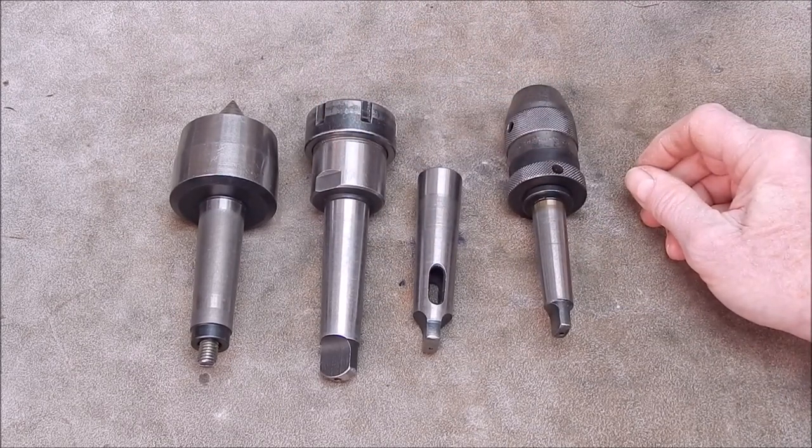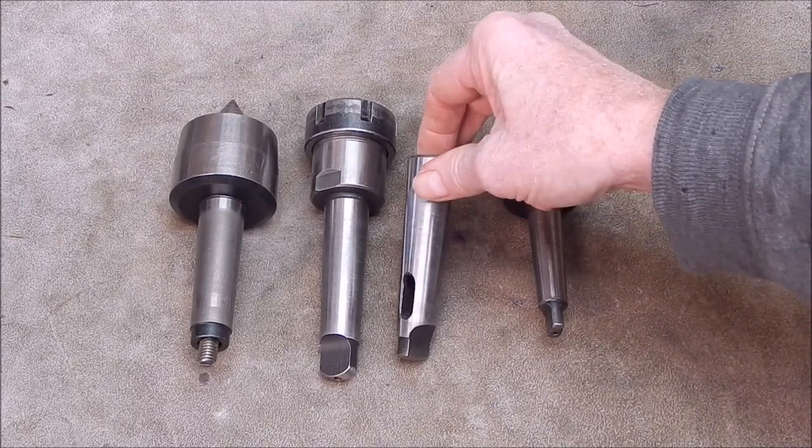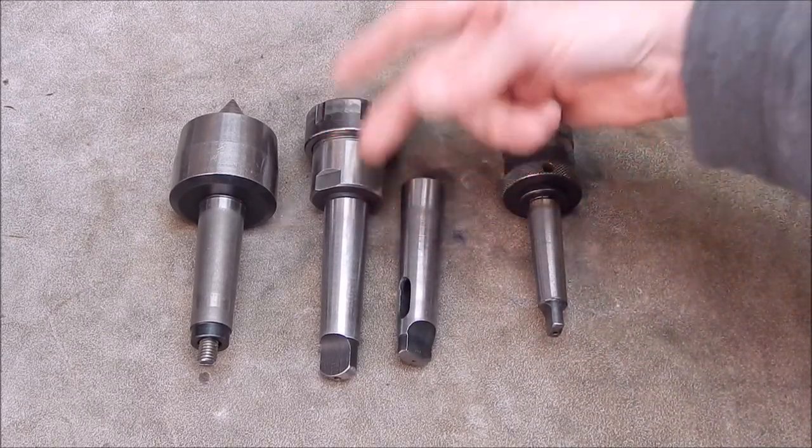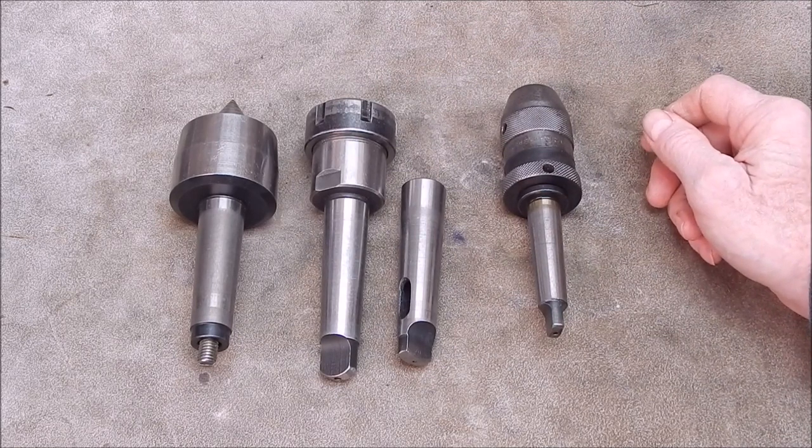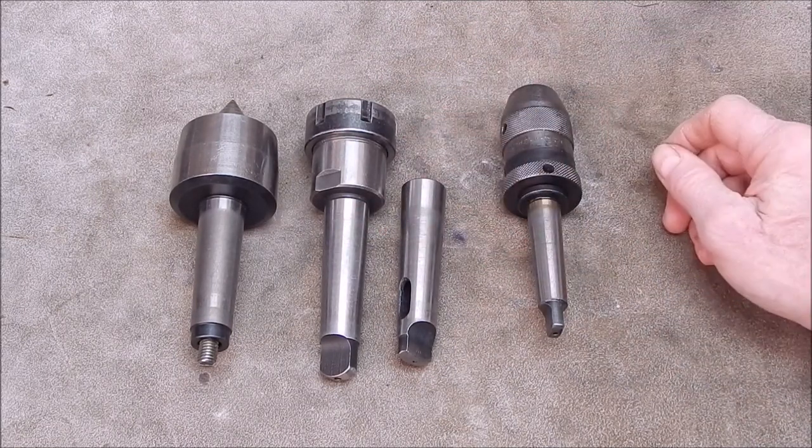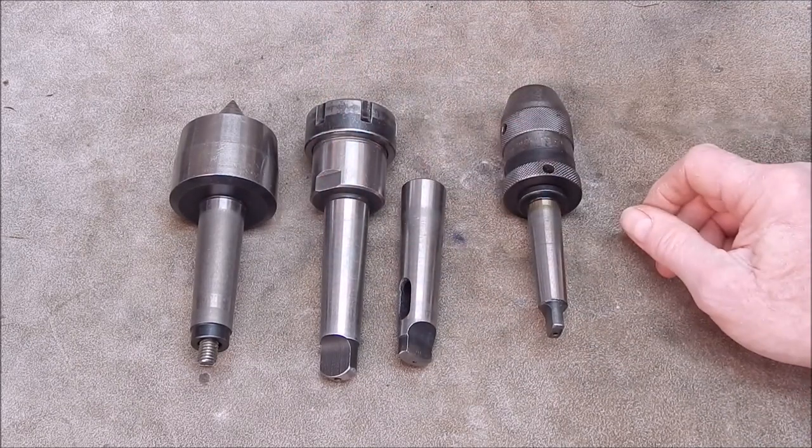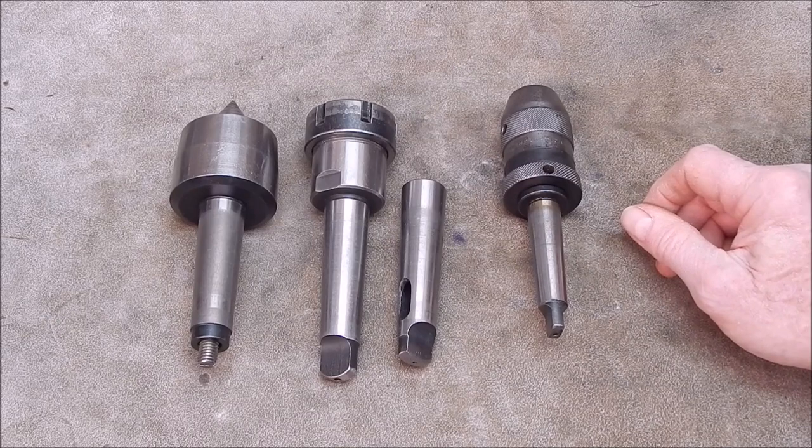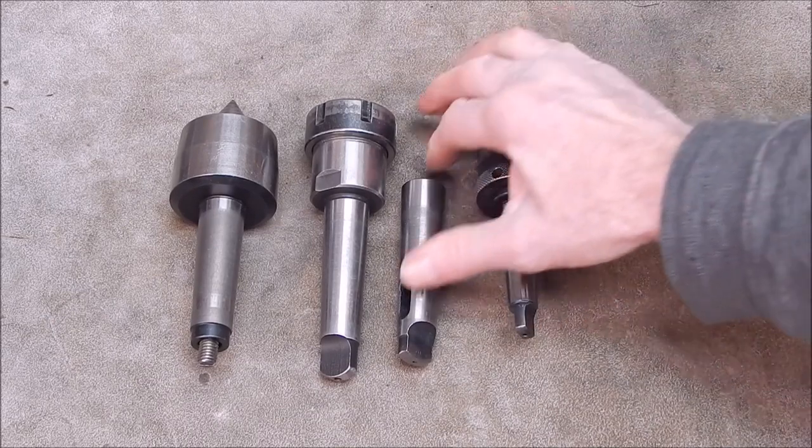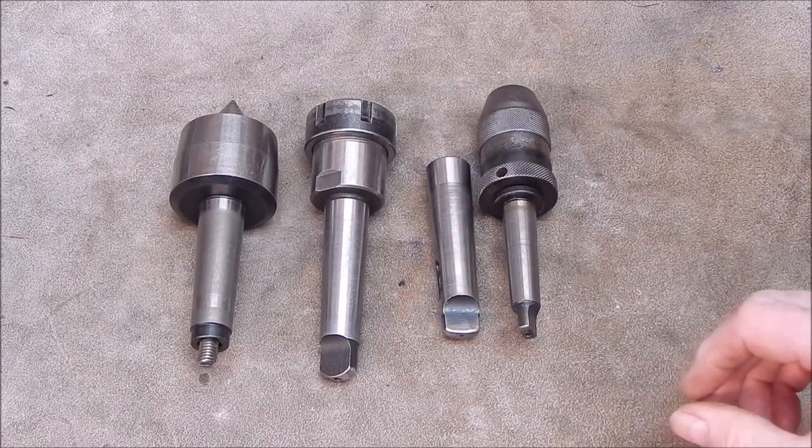You could put a Morse taper in an adapter and you can get a perfect reading if the errors cancel each other out, or you could get a lot of runout if both of the errors are in the same position radially and they'll compound each other. So how bad are these adapters?